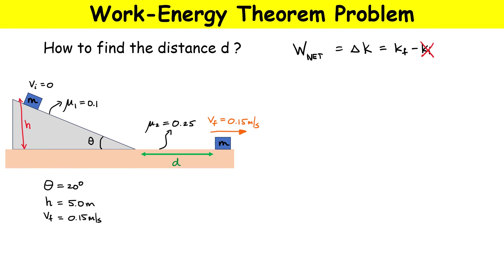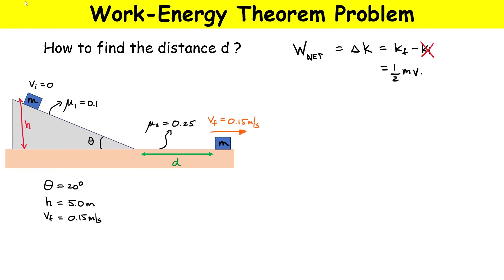Next, we write down the final kinetic energy: it's one-half the mass of the block times the final velocity squared. The mass is not given in this problem, so it must be that the mass cancels out. But we still have to calculate the left-hand side of the work-energy theorem.